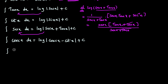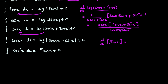Integral of secant squared x dx. Integral of secant squared x dx is tan x plus c. Why? From the differentiation chapter, we know the derivative of tan x is secant squared x. Integration can be understood very easily when you are good in differentiation. Because if we differentiate tan x plus c, you will get secant squared x. That's why integral of secant squared x dx is tan x plus c.